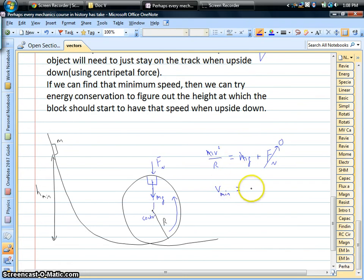And your minimum speed, if we solve for that, the radius comes up. It's going to be the square root of the acceleration of gravity times the radius of your loop. Okay, so that's step one.